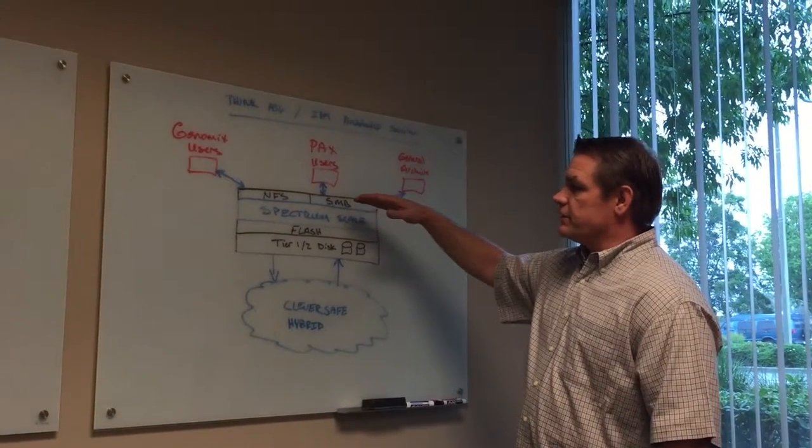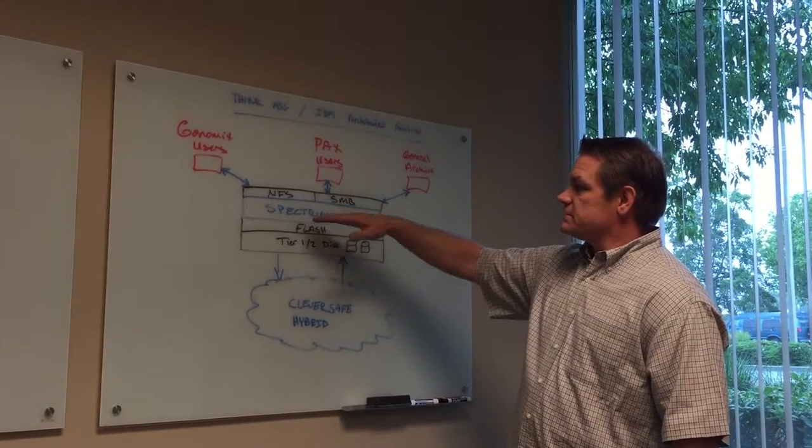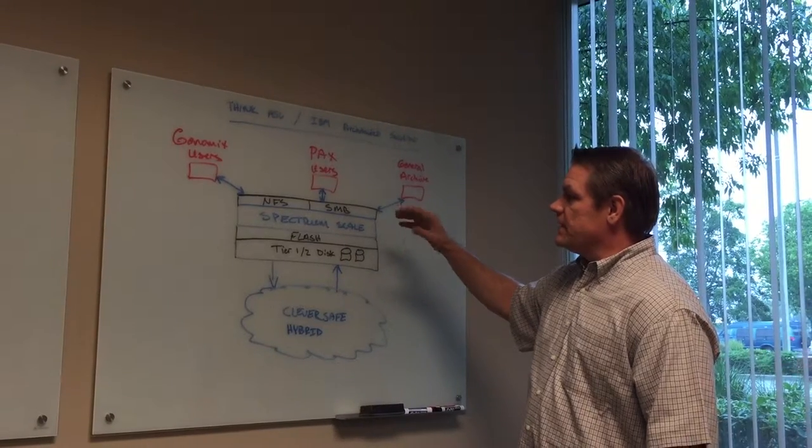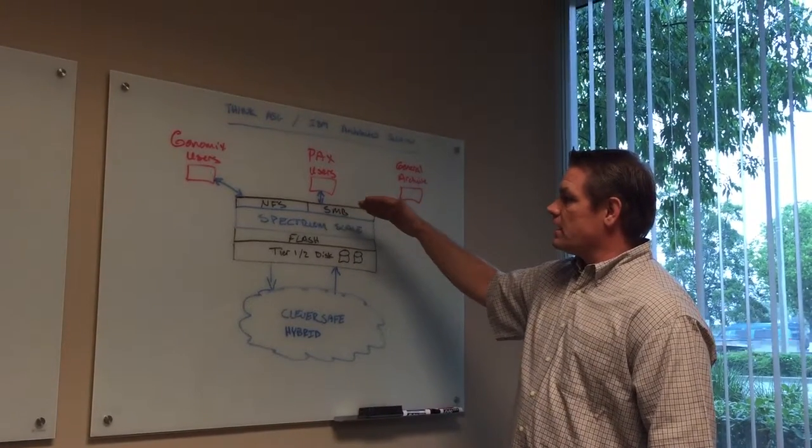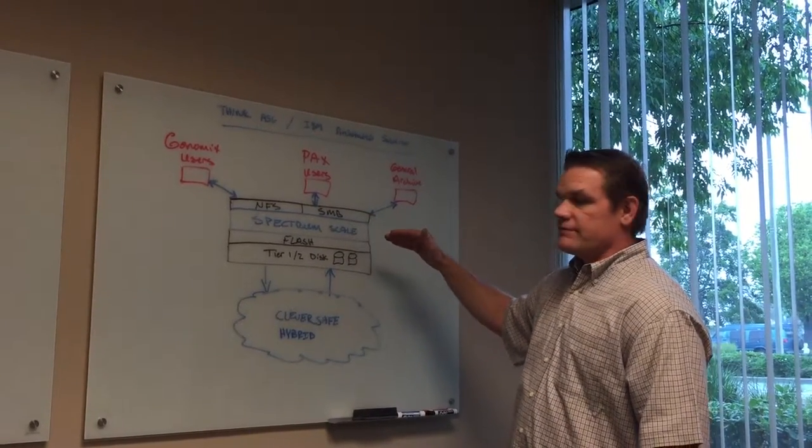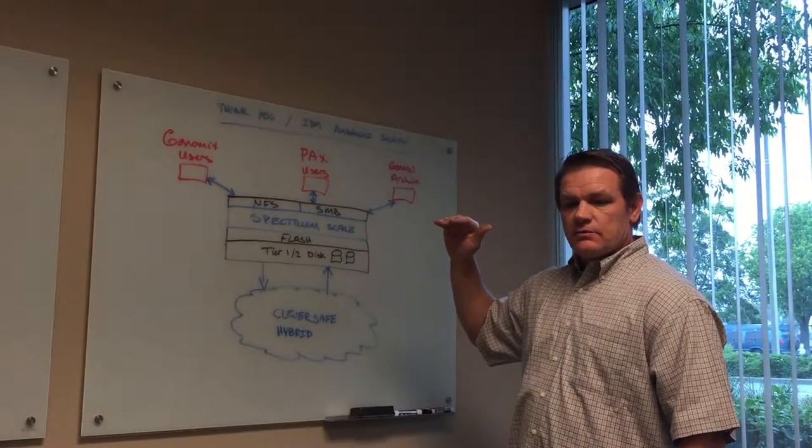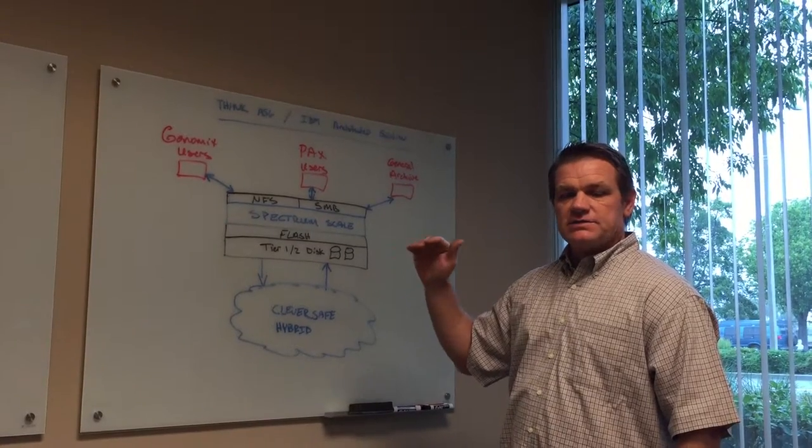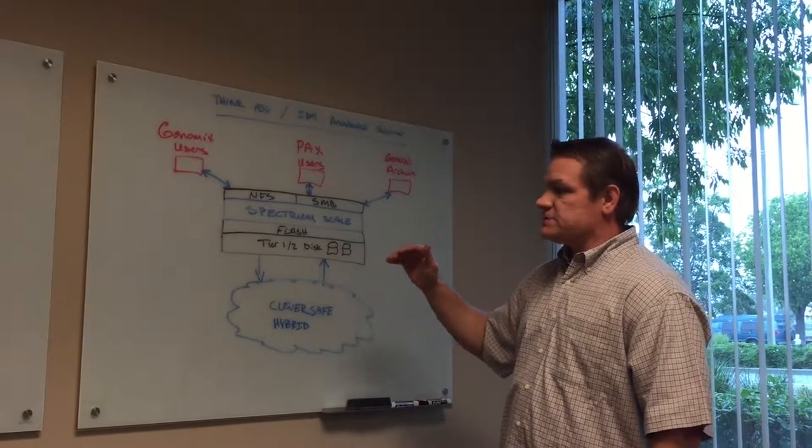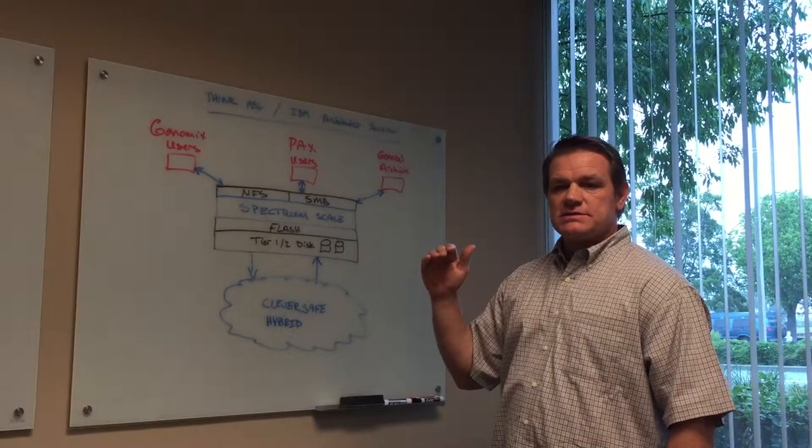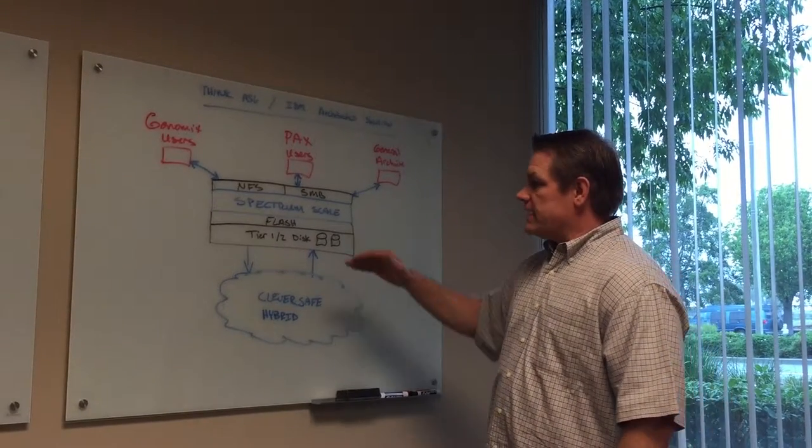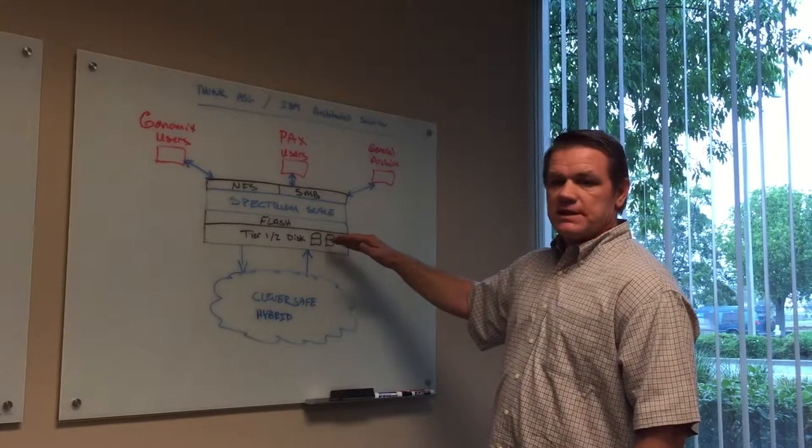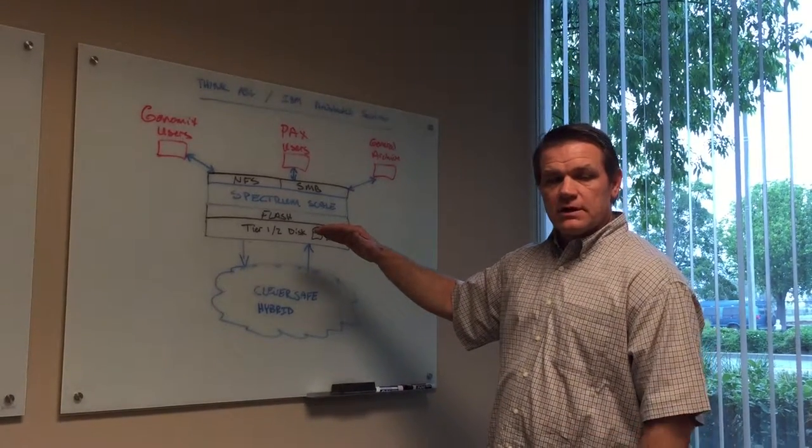They're interacting with their current environment through SMB and NFS protocols. We have a system offering those protocols through Spectrum Scale. We have a flash tier, so when users are accessing files locally, it's very fast and responsive. As those files become less active, we automatically move them to another tier of storage—in this case, 10,000 RPM spinning disks.